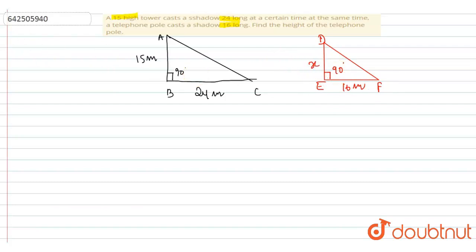Both the triangles are similar because both are right angle triangles. So for similar right angle triangles, we can write that AB by DE will be equal to BC by EF.